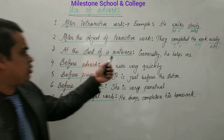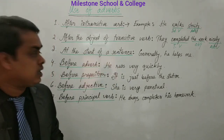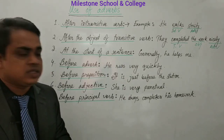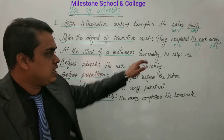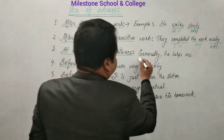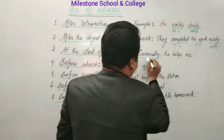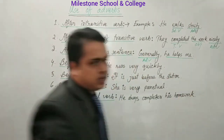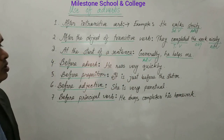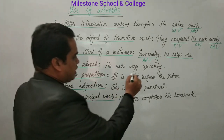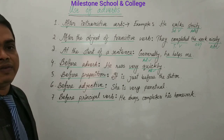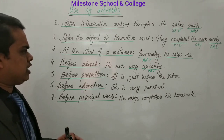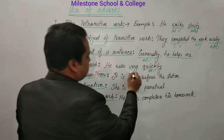At the start of the sentence, we use adverb — for example, 'Generally, he helps me.' Here, 'generally' is an adverb modifying the whole sentence. Now, before an adverb, we also use an adverb. For example, 'very quickly' — 'quickly' is an adverb and 'very' is also an adverb. An adverb modifies an adverb also.